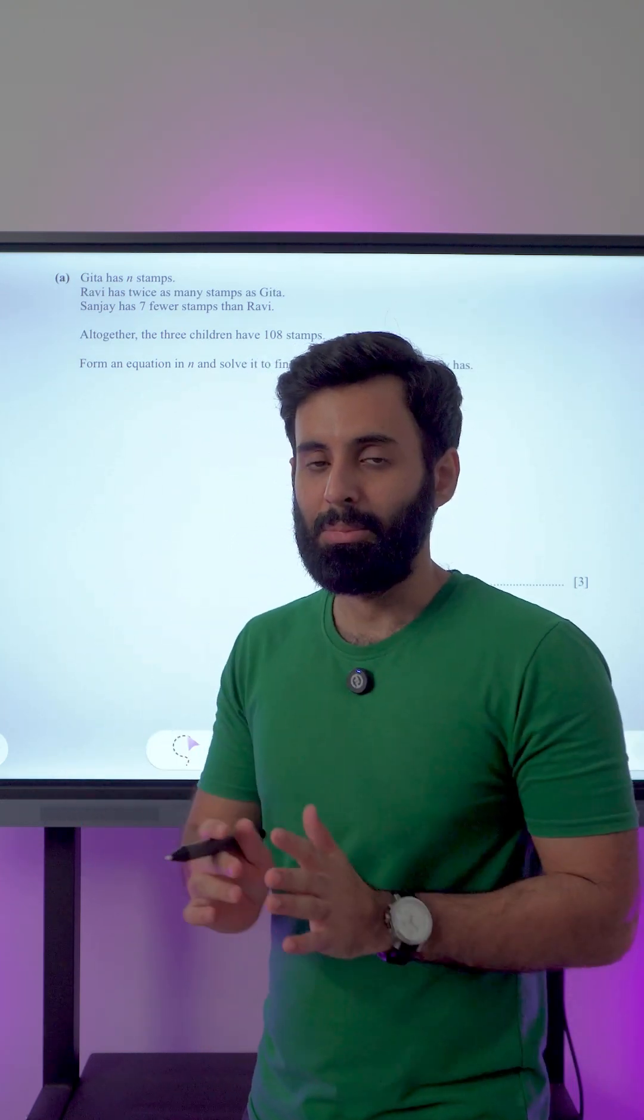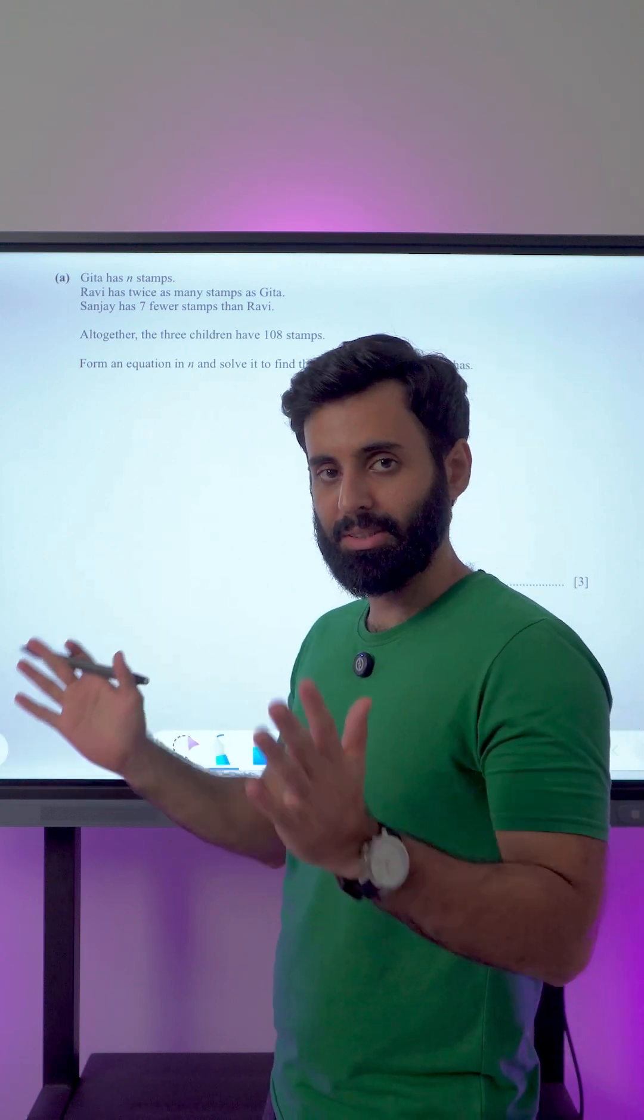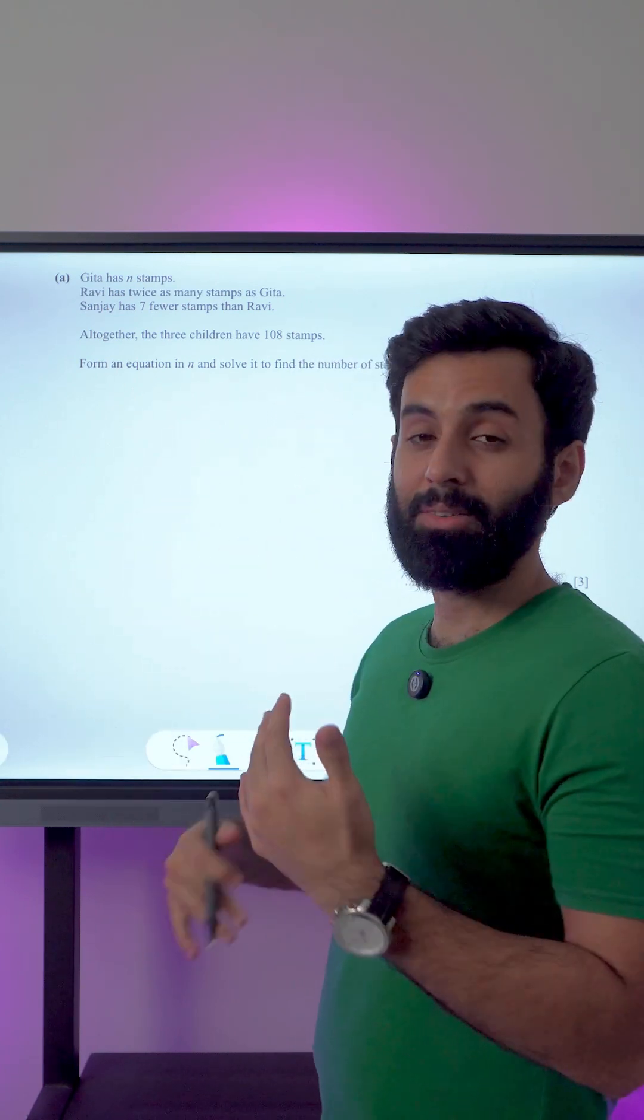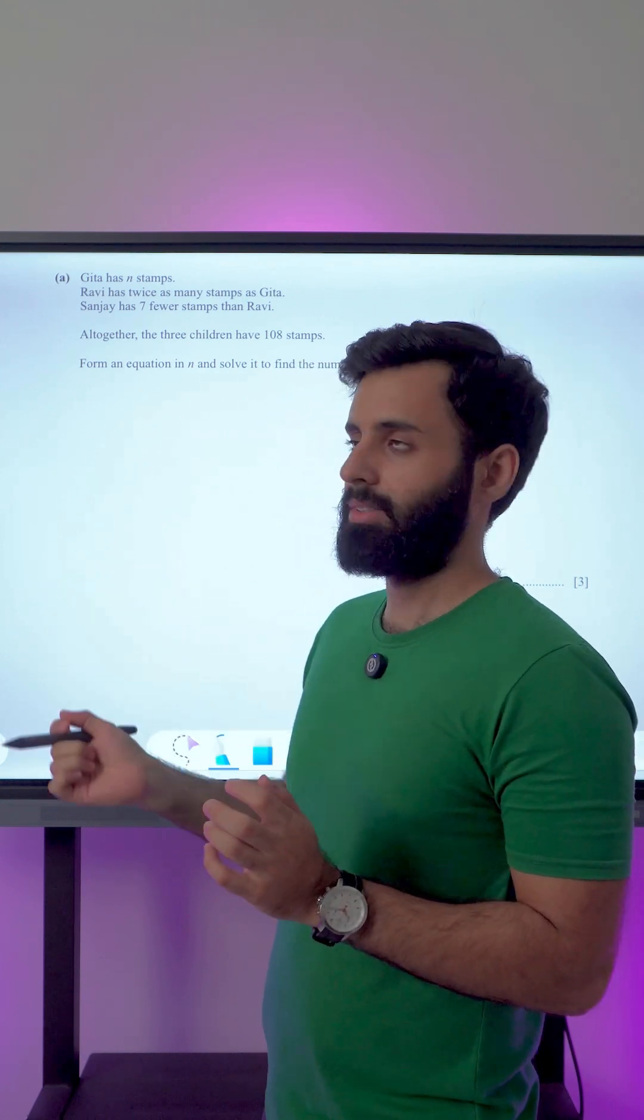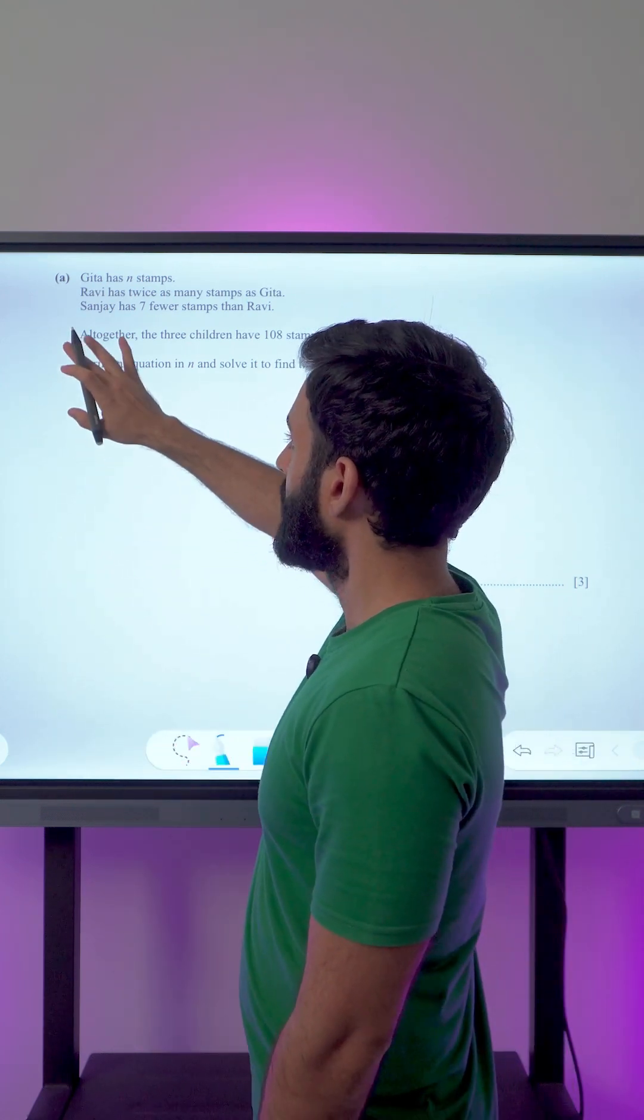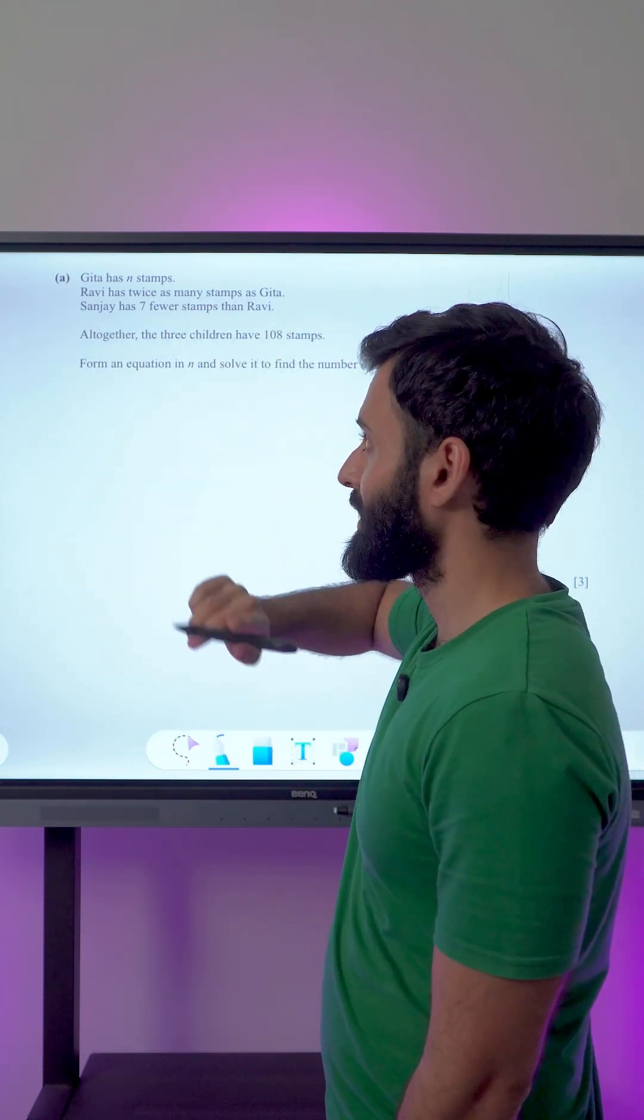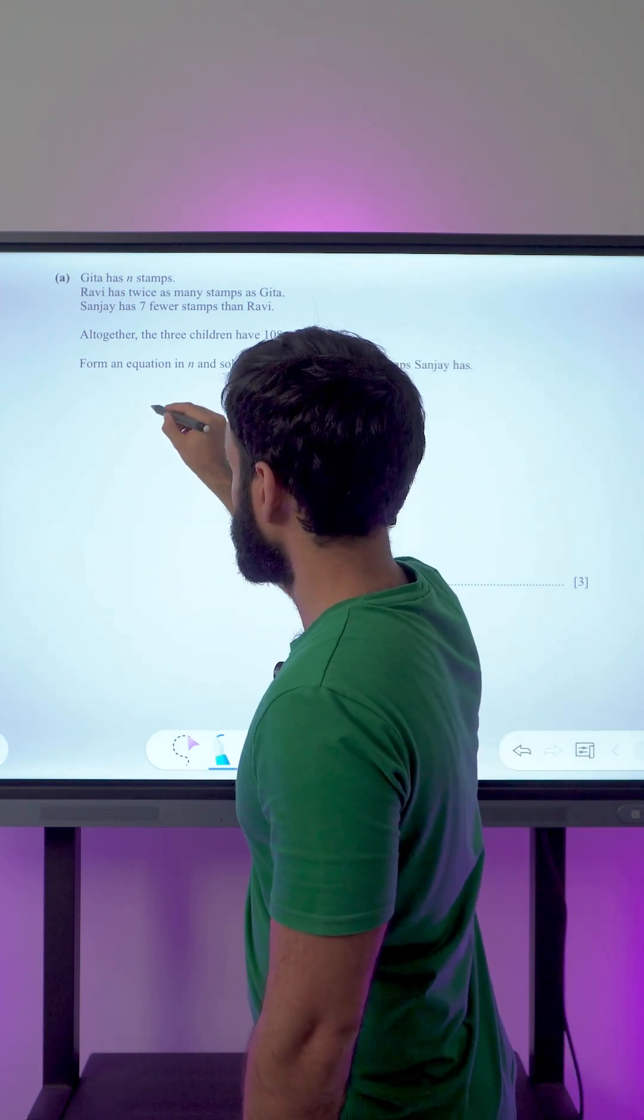Here is my suggestion: first you read the question from the beginning till the end, and then you read the question again, this time with a purpose. And the purpose is to pick out important information. Okay, so after reading the question once, we can see that there are three people in question, so...